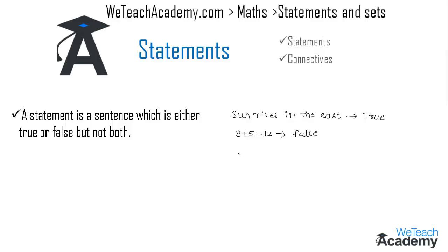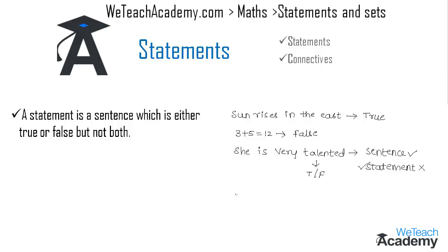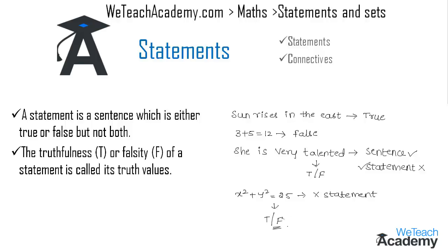Consider the sentence 'She is very talented' — this is not a statement, as we need more information to decide whether it is true or false. Similarly, 'x squared plus y squared is equal to 25' is not a statement, as we need the values of x and y to decide. The truthfulness or falsity of a statement is called its truth value.